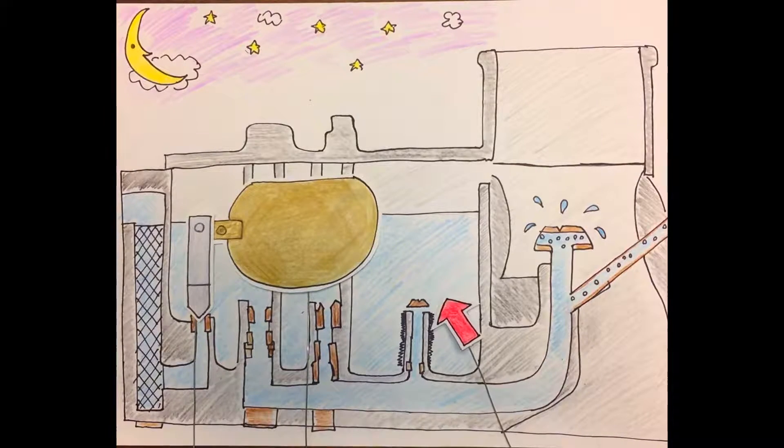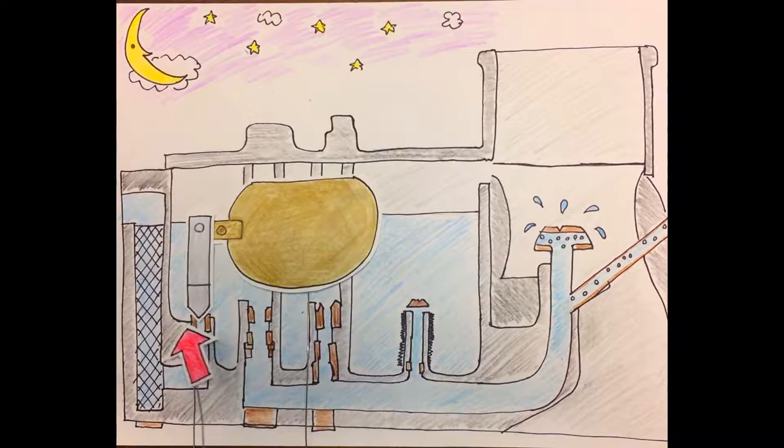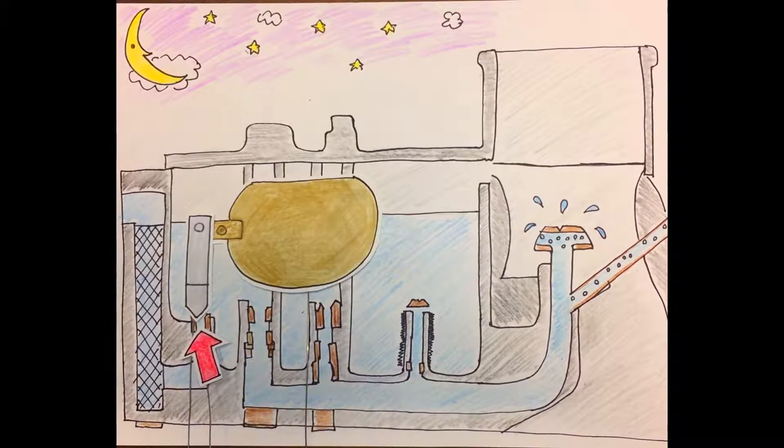In a float type carburetor, fuel is stored in the float chamber. The amount of fuel allowed to flow into the float chamber is controlled by a float operated needle valve installed in the fuel inlet.